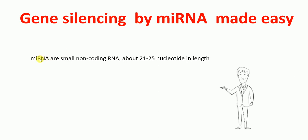Basically, these micro RNAs are small non-coding RNAs which are about 21 to 25 nucleotides in length. They are endogenous, and they are small because they have only 21 to 25 nucleotides. They are non-coding, so they don't make proteins.